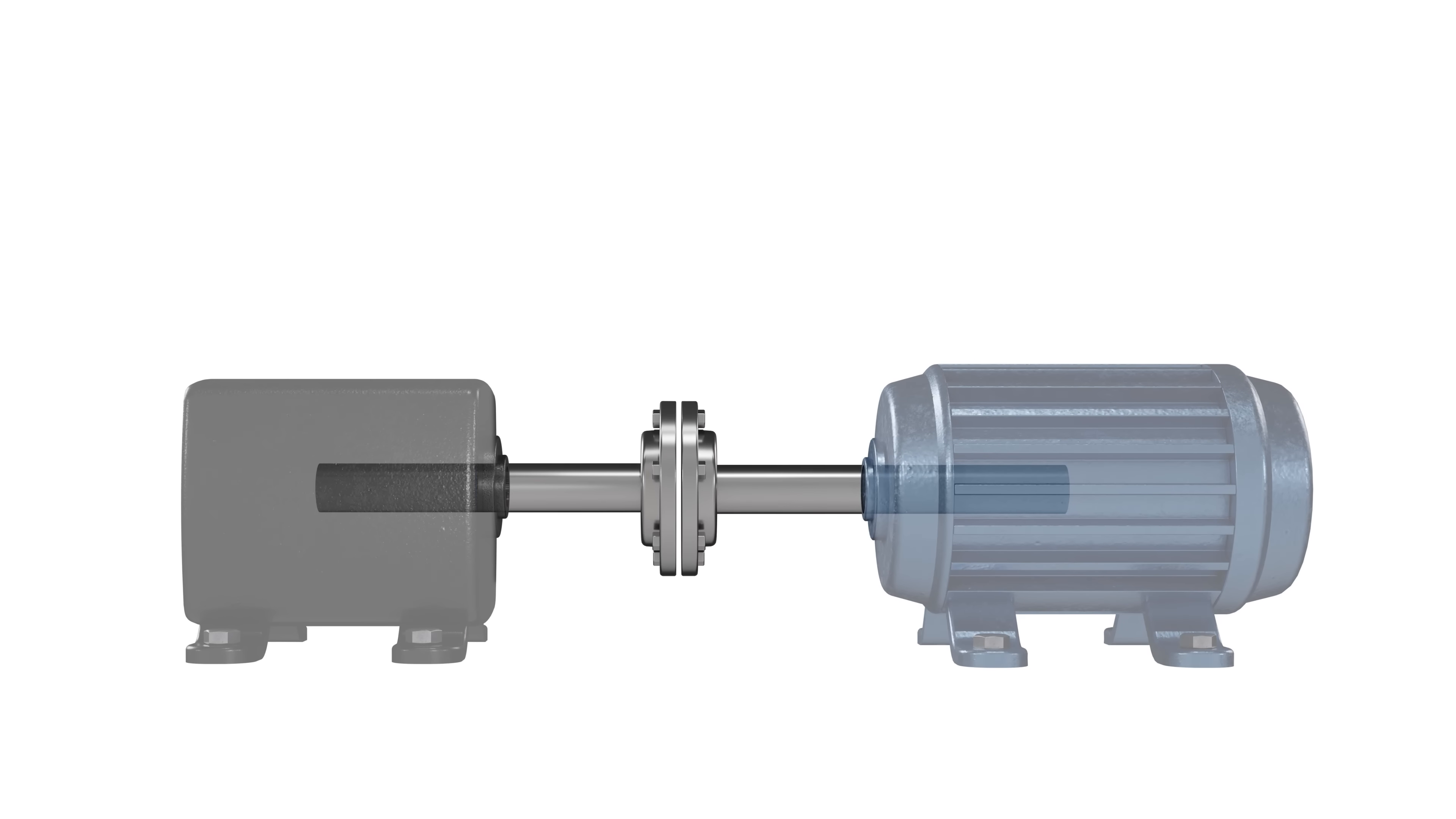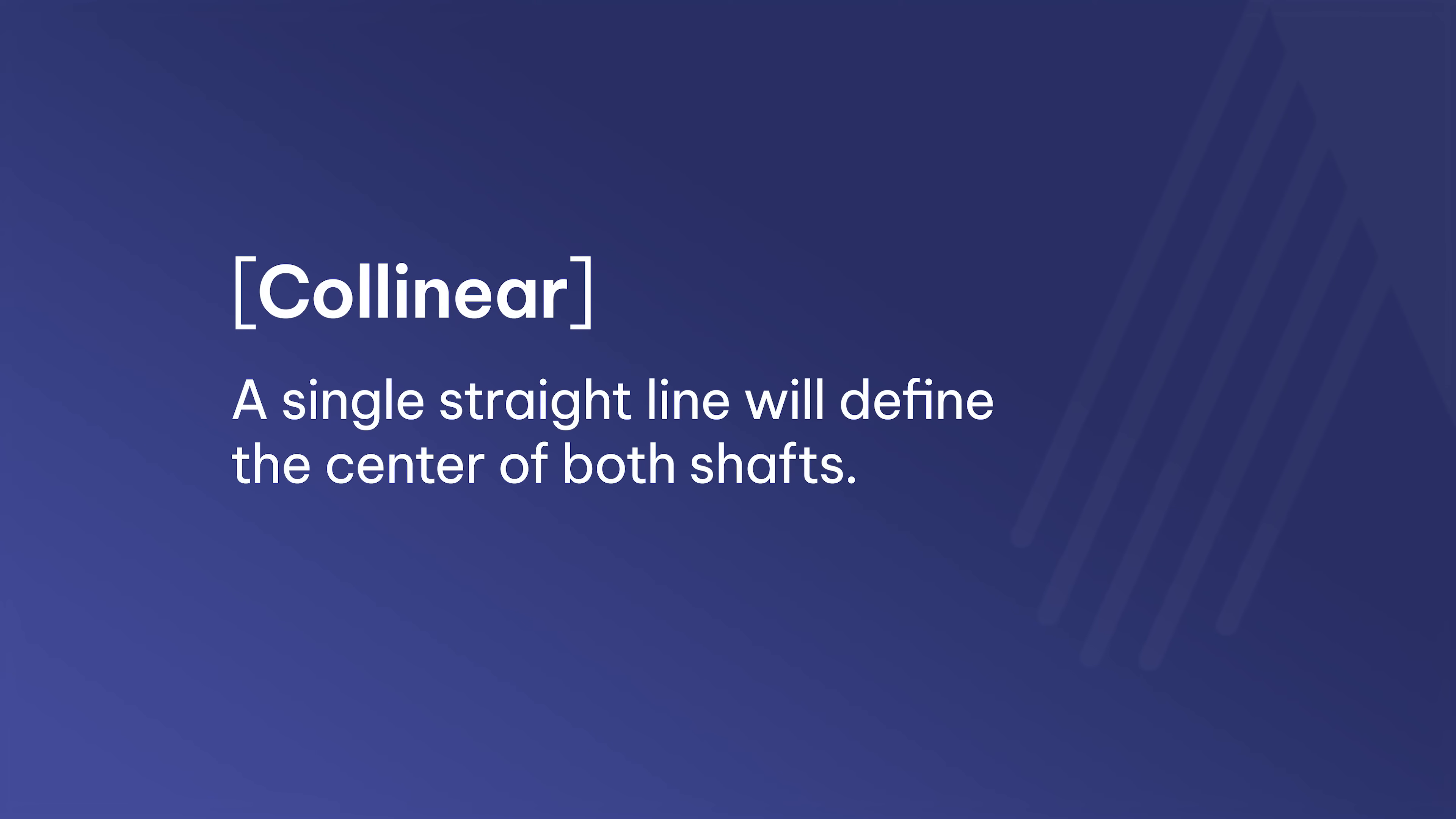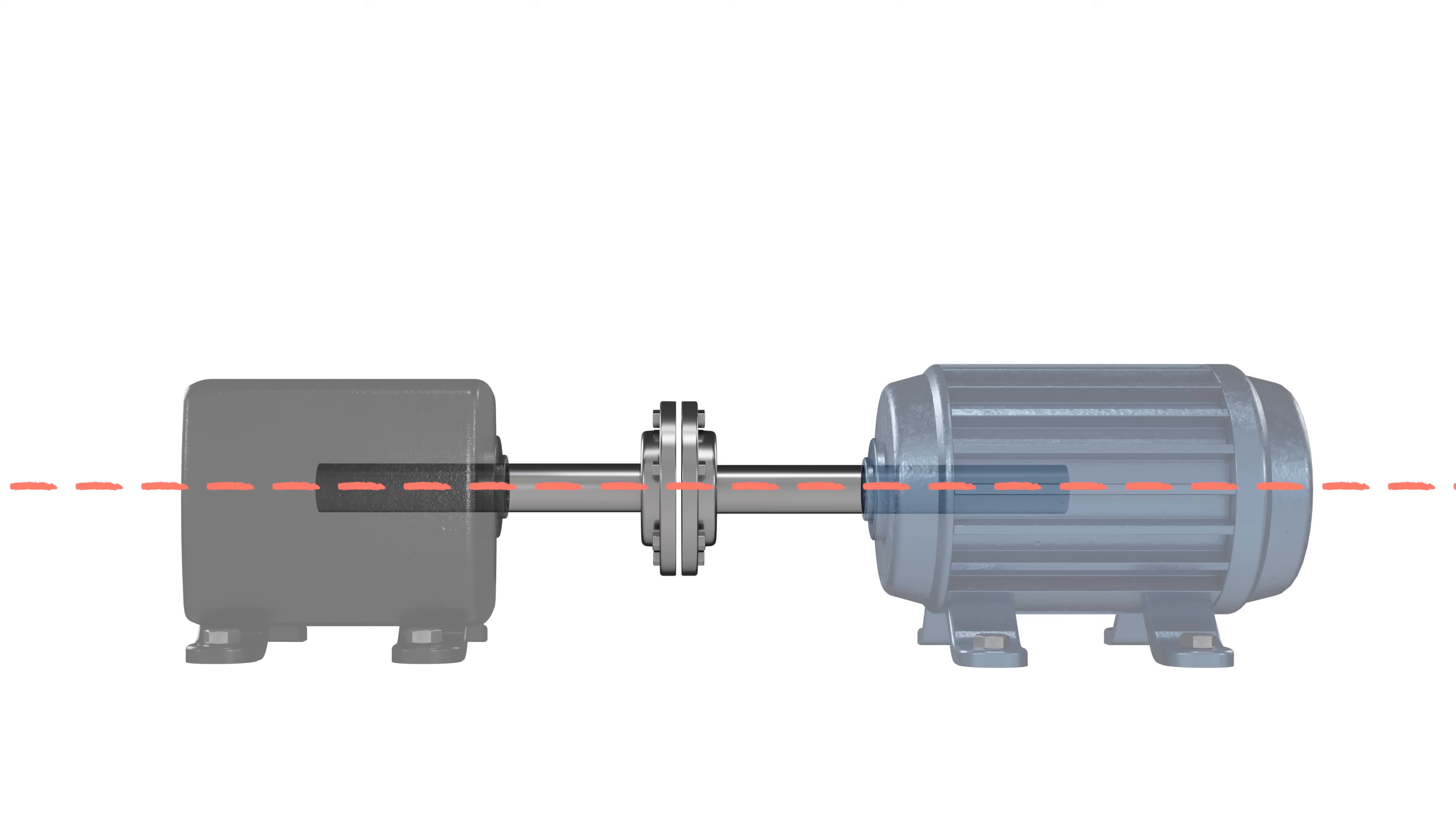If two shafts are perfectly aligned, they are said to be collinear. Collinear means that a single straight line will define the center of both shafts. Of course, this is almost never the case in the field.